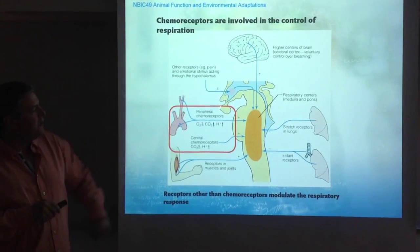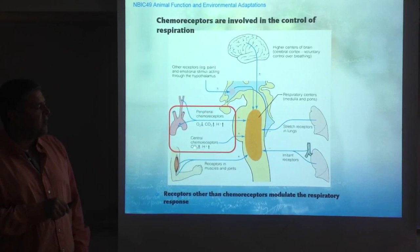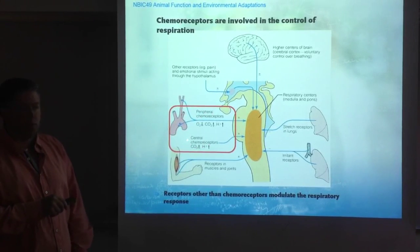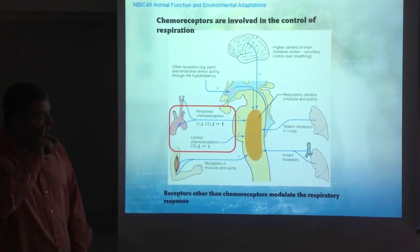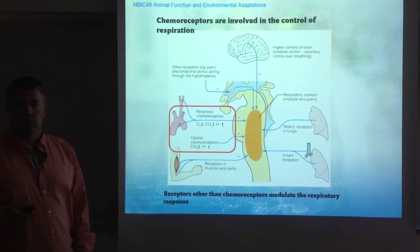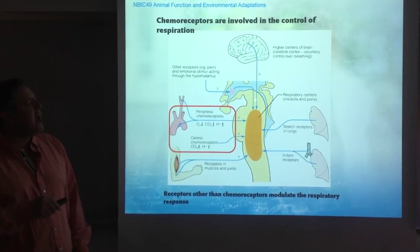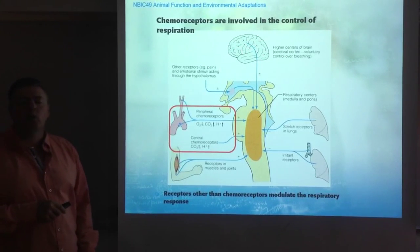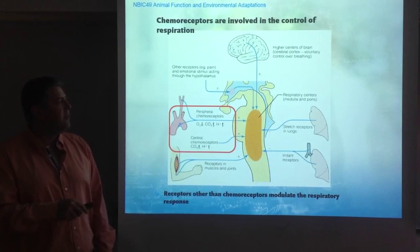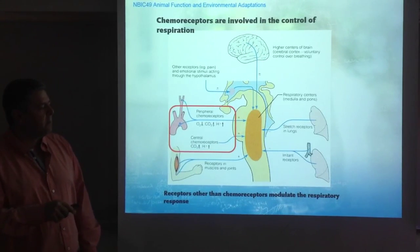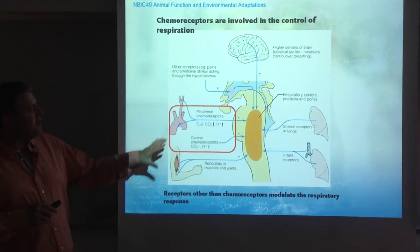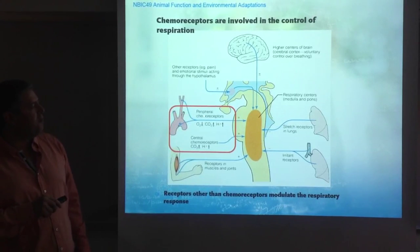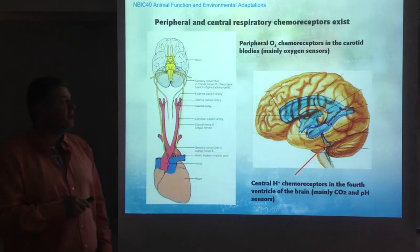Chemoreceptors come in the form of peripheral chemoreceptors and central chemoreceptors, as seen here. This picture also illustrates other mechanisms that send information to control respiration, but we are not going to be talking about them. So essentially, chemoreceptors can be peripheral — meaning in the periphery of the body — or central, in the central nervous system.